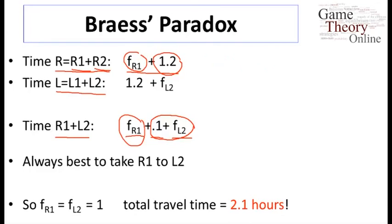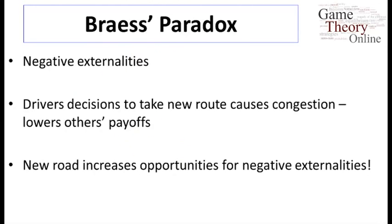This might seem as a theoretical curiosity. In fact, there's anecdotal evidence that you see it in real life. There's a famous example in Manhattan where 42nd Street was closed down for construction, and the claim is traffic eased in the city. Be that as it may, it's very clear that negative externalities, as they're called, create very complicated game situations.